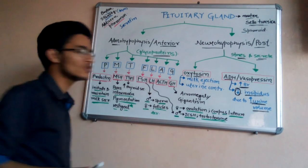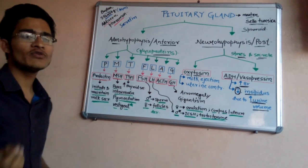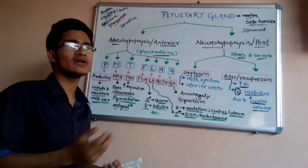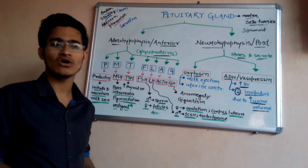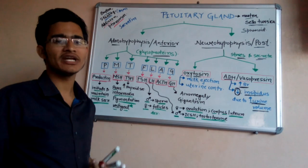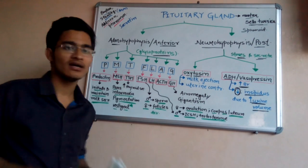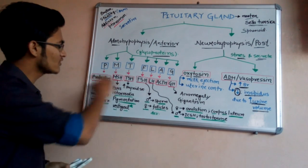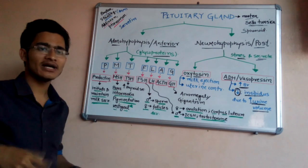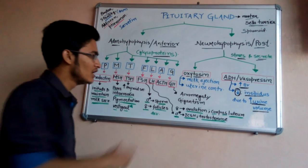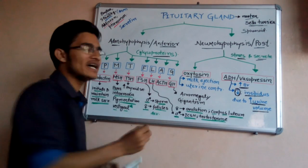A stands for ACTH, the adrenocorticotropic hormone. As the name simply indicates, it will stimulate the adrenal cortex. Some hormones act exactly as their name indicates, so these are straightforward to remember.